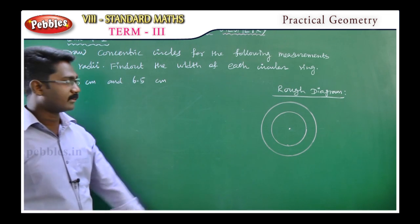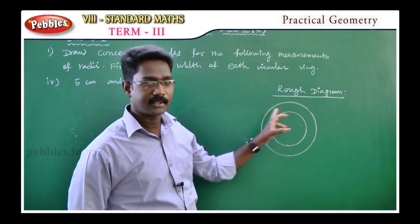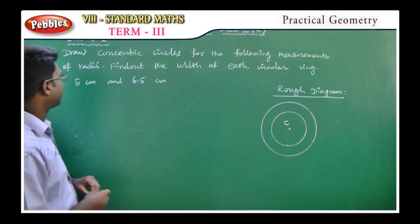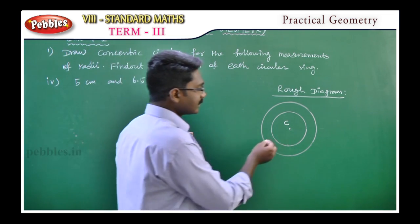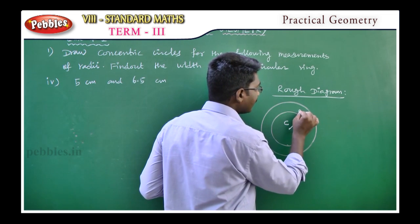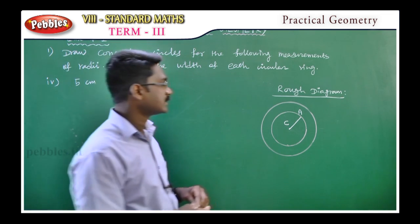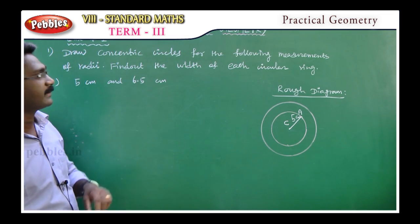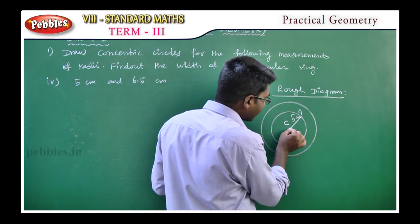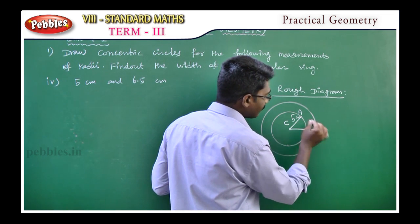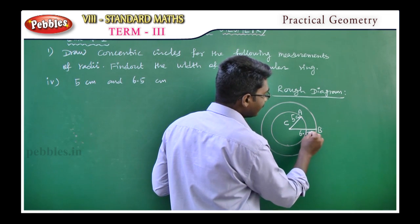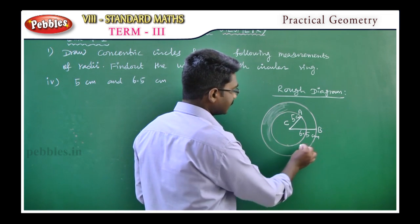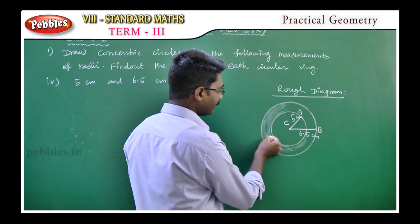This is the rough diagram. The center point is C. The measurement for the inner circle is 5cm, with center C. The second circle has a radius of 6.5cm. This forms the circular ring, and we need to find the width of each circular ring.